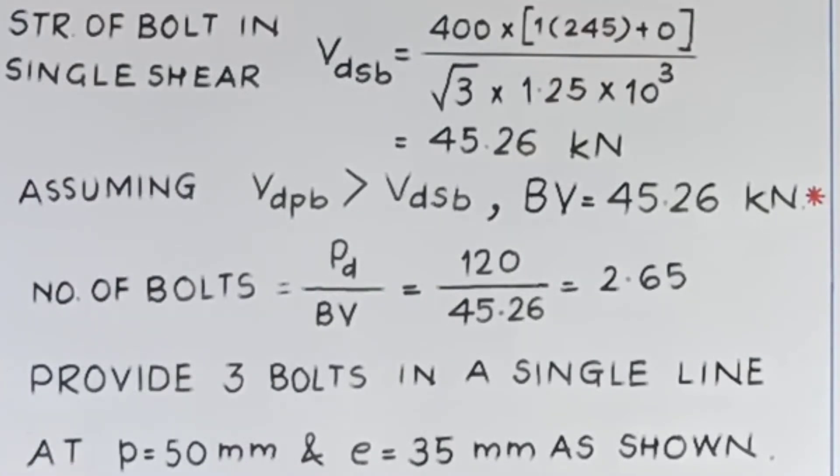Now we have to design, so we don't know what is pitch, what is edge distance, so we will assume that VDPB is greater than VDSB, therefore bolt value will be minimum of 2, that is 45.26 kilonewton. Unless we know what is the bolt value, you cannot calculate what are the number of bolts required. Therefore, number of bolts is PD upon BV, that is 120 upon 45.26, it comes out to be 2.65, that is 3.